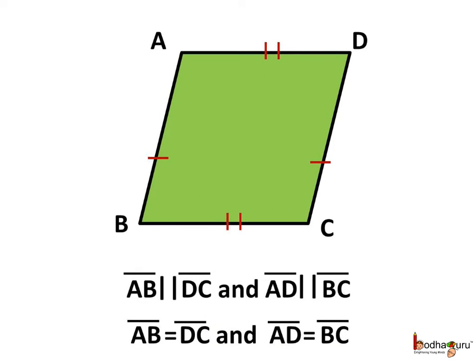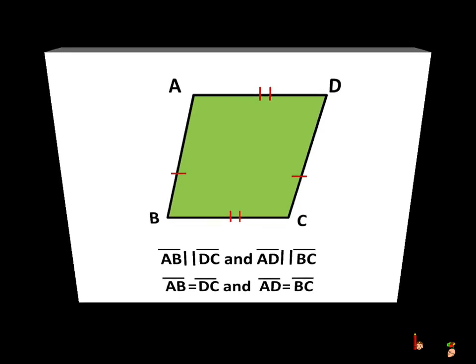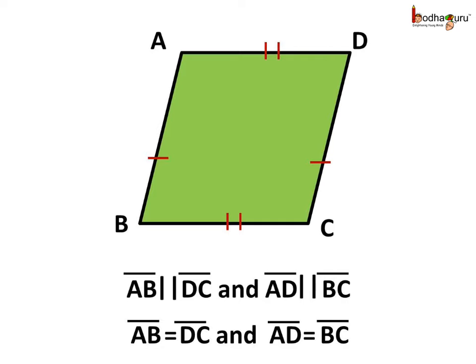Now, we have learnt about one more quadrilateral type, which is a parallelogram. In a parallelogram, the opposite sides are parallel and equal. Here, in the parallelogram ABCD, the opposite sides are parallel, which means AB and DC are parallel, and AD and BC are parallel. Also, the opposite sides are equal, and hence AB is equal to DC and AD is equal to BC.